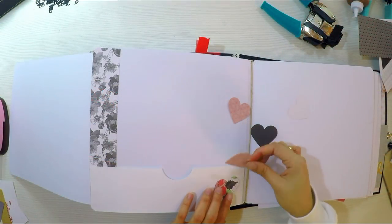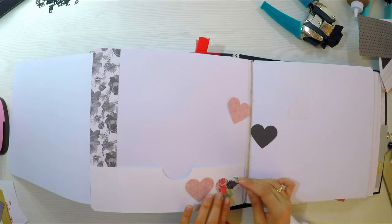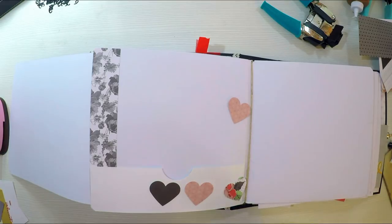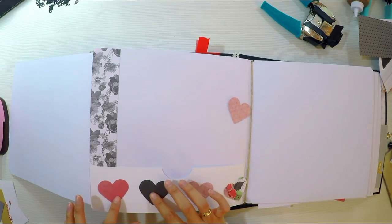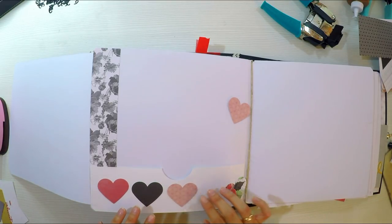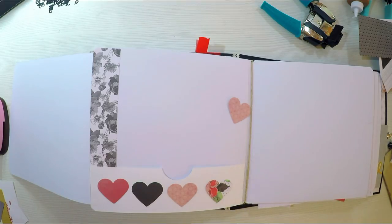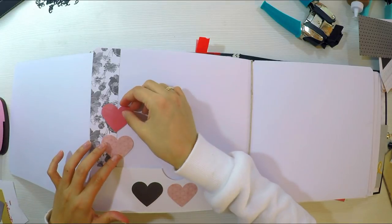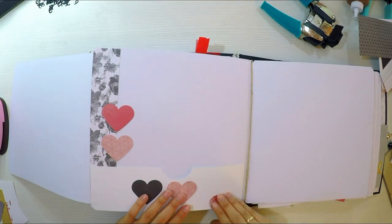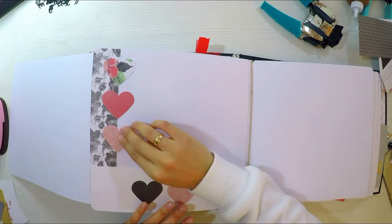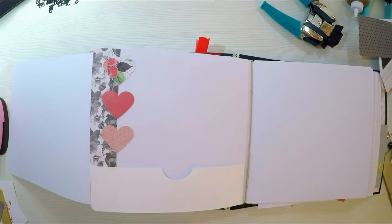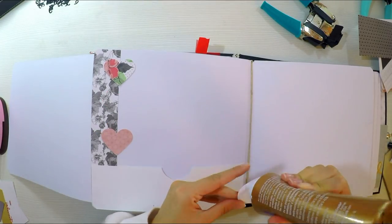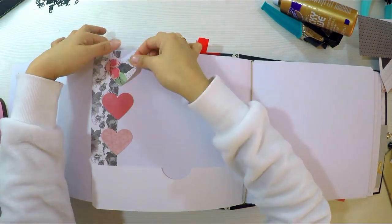Espero que les esté gustando. Ya llevamos dos tutoriales en los que en el primero hicimos toda la estructura, ya que este álbum es bastante grande y lo hemos hecho todo desde el principio. Además hicimos una encuadernación muy resistente y que nos permitía añadir un sobre en cada una de sus hojas, añadiendo dureza a cada una de estas hojas para que todas las estructuras que nosotros vayamos a hacer aguanten bien y queden bastante resistentes.